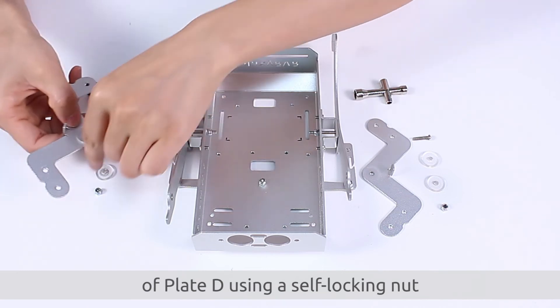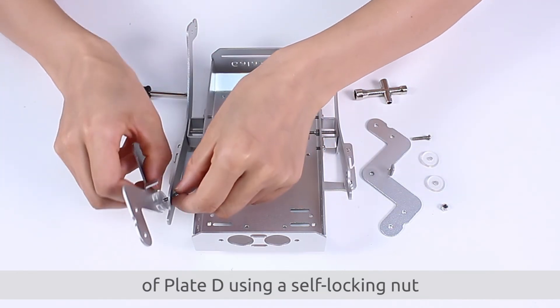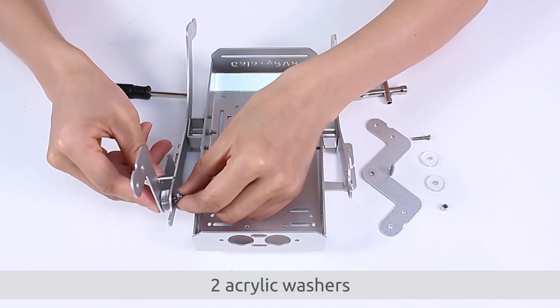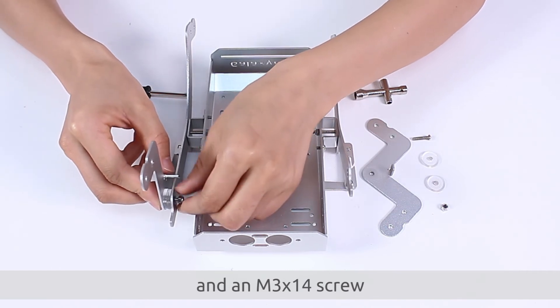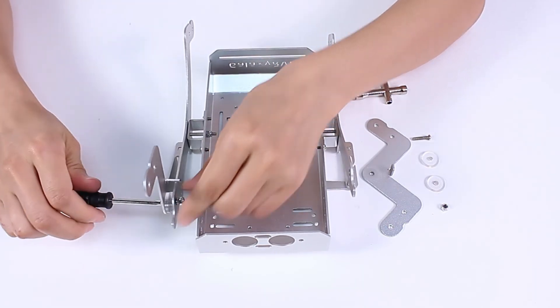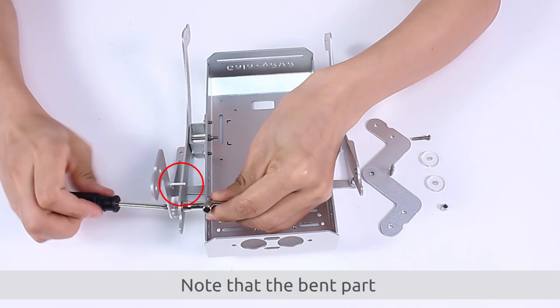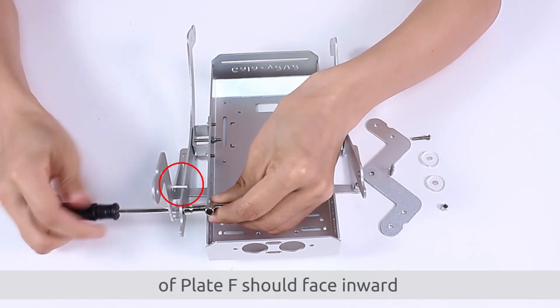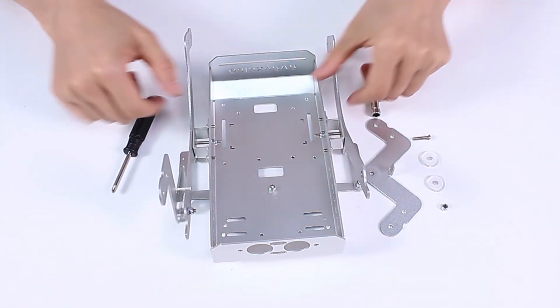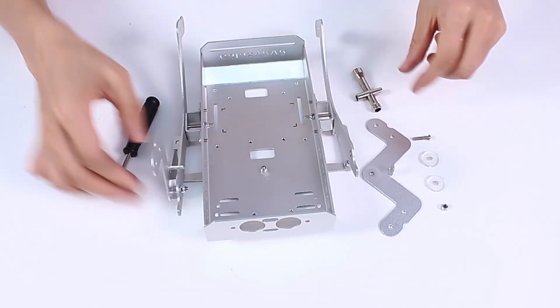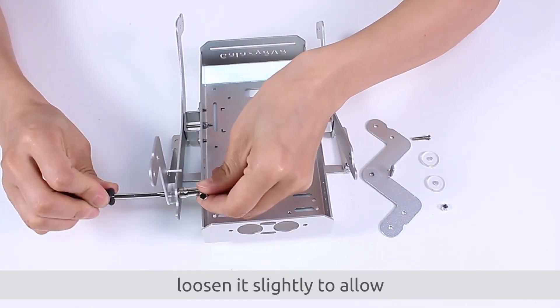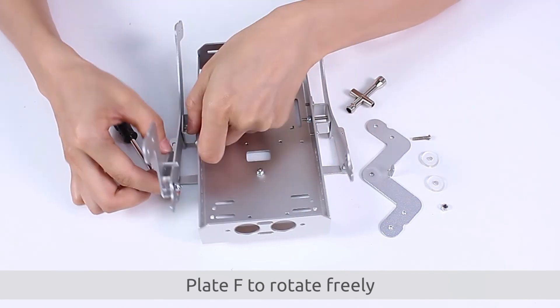Secure a plate F to the front end of plate D using a self-locking nut, two acrylic washers, and an M3 x 14 screw. Note that the bent part of plate F should face inward. Afterwards, loosen it slightly to allow plate F to rotate freely.